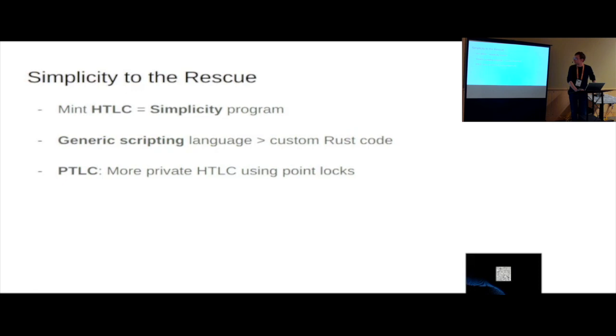So the Mint HTLC can become a Simplicity program which would have the same semantics as the existing code. Because this current code is a Rust implementation so the Mint HTLC is implemented in Rust. It doesn't even use any dedicated language like Bitcoin script or Simplicity. And what Simplicity could bring to the table is a generic scripting language which would be much more flexible, extendable and less error-prone than a custom Rust implementation. And this could also be reused for other projects that are similar.